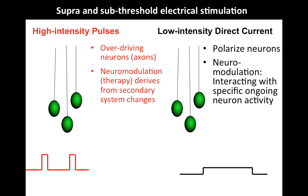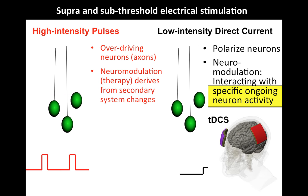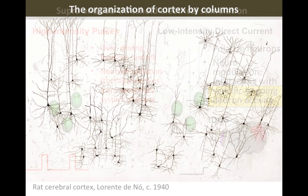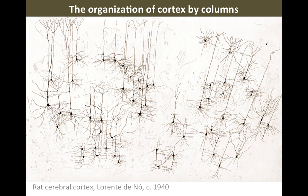So something is ongoing — like you're thinking about something, you're practicing something — and tDCS is placed on top of that and changes the neuronal activity associated with that task. It is therefore inherently specific to the ongoing activity. This applies to tDCS as well as other sub-threshold techniques such as tACS and tRNS.